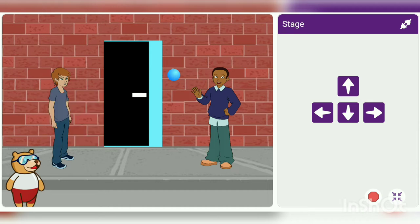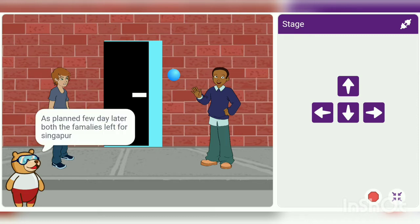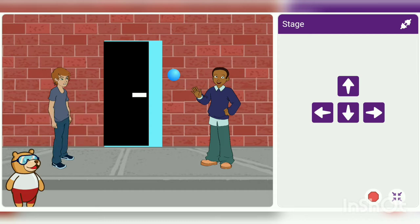When Mr. Sharma informed his neighbour Rahul about the trip, Rahul asked Mr. Sharma if he could also join them with his family. As planned, a few days later, both the families left for Singapore.